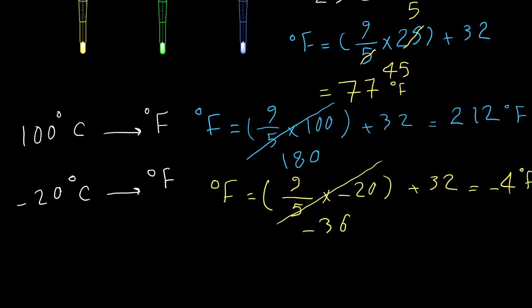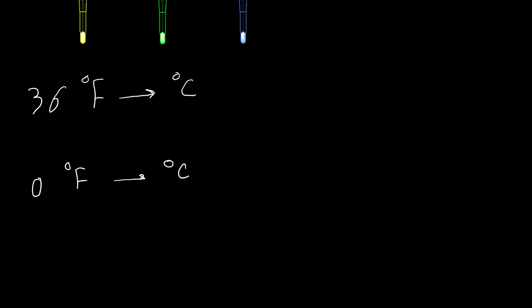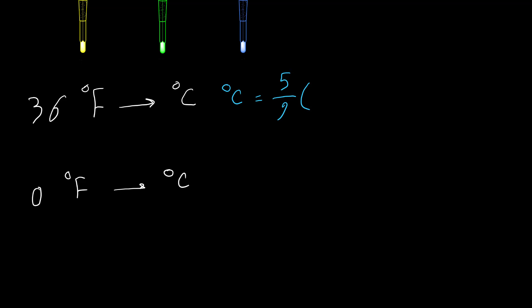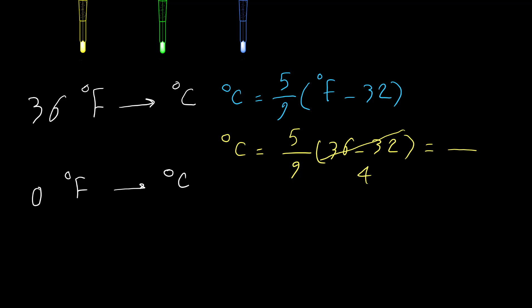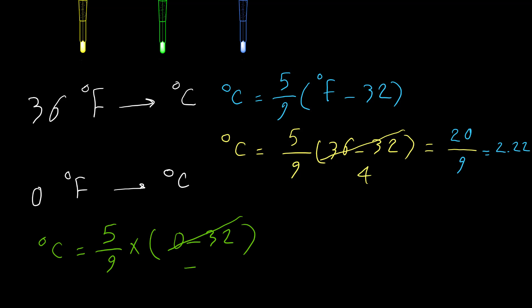Now let's convert Fahrenheit to Celsius. The equation is: Celsius = (5/9) × (Fahrenheit − 32). Convert 36°F to Celsius: Celsius = (5/9) × (36 − 32) = (5/9) × 4 = 20/9 ≈ 2.22°C. For 0°F: Celsius = (5/9) × (0 − 32) = (5/9) × (−32).